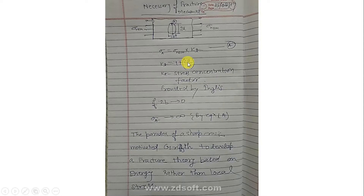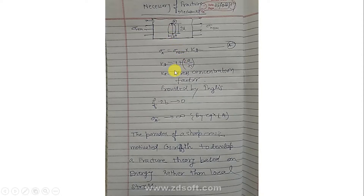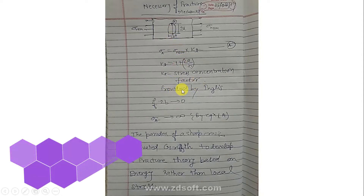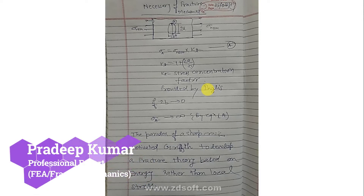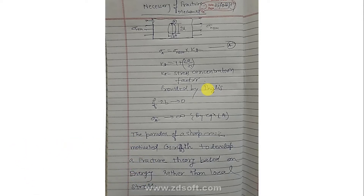Here, 2a is the major axis distance, and 2b is the minor axis distance. This equation was provided by Inglis, and this equation predicts the stress at point A very well.